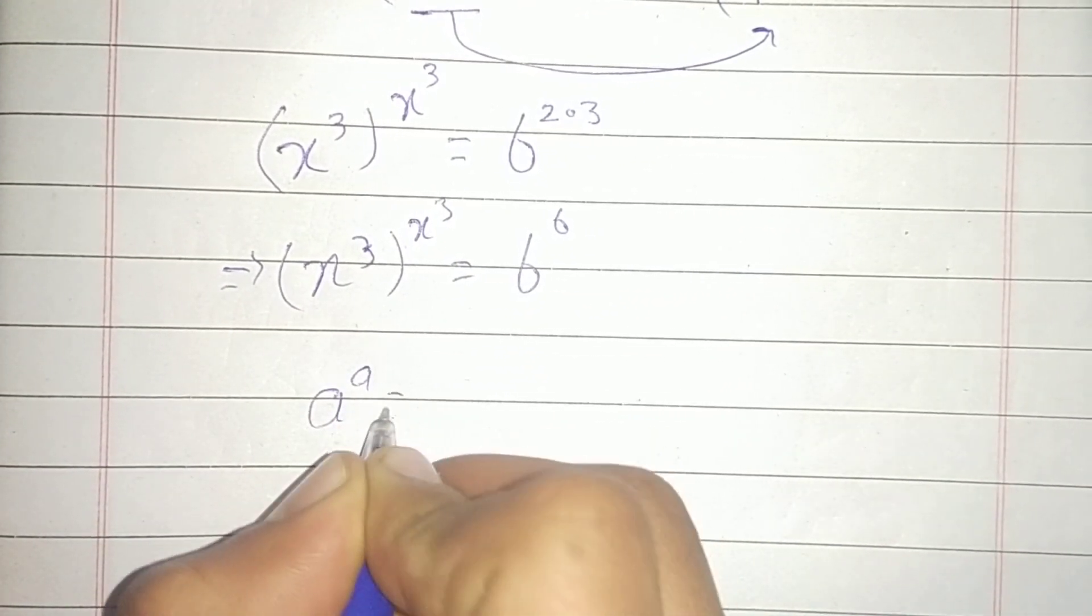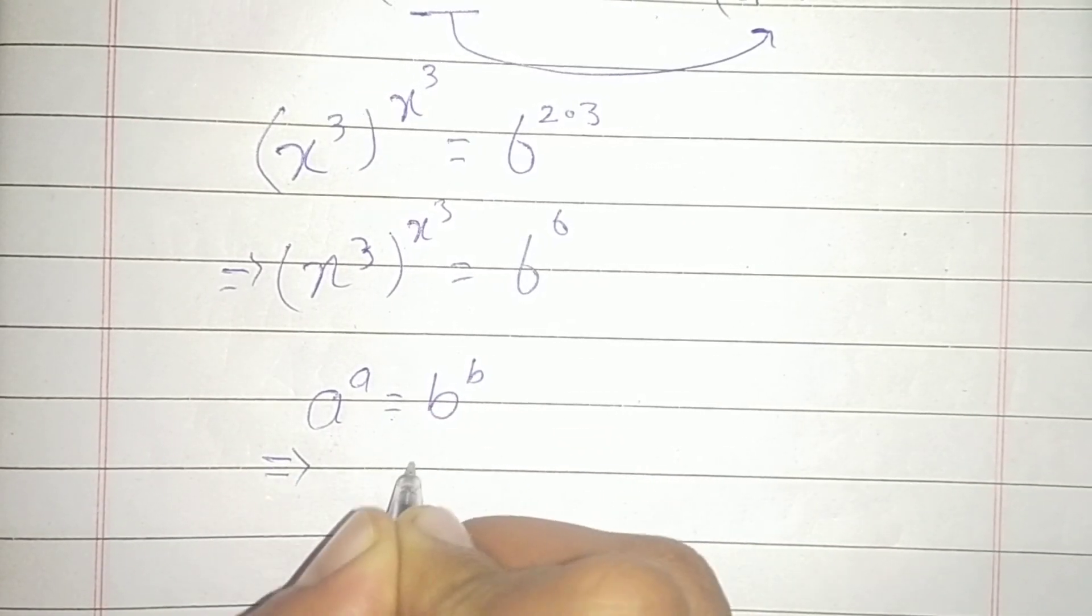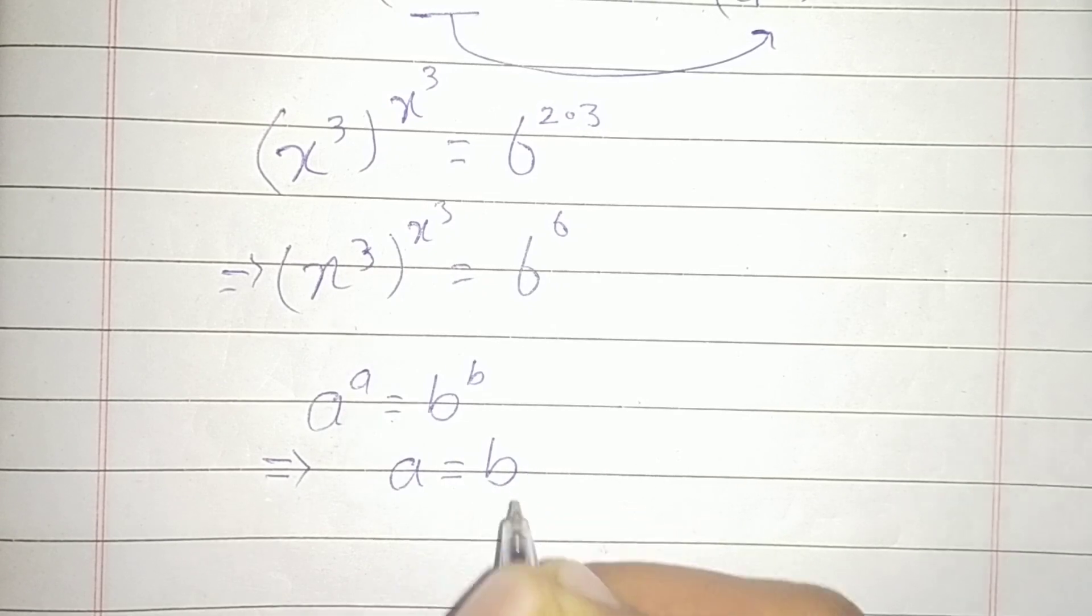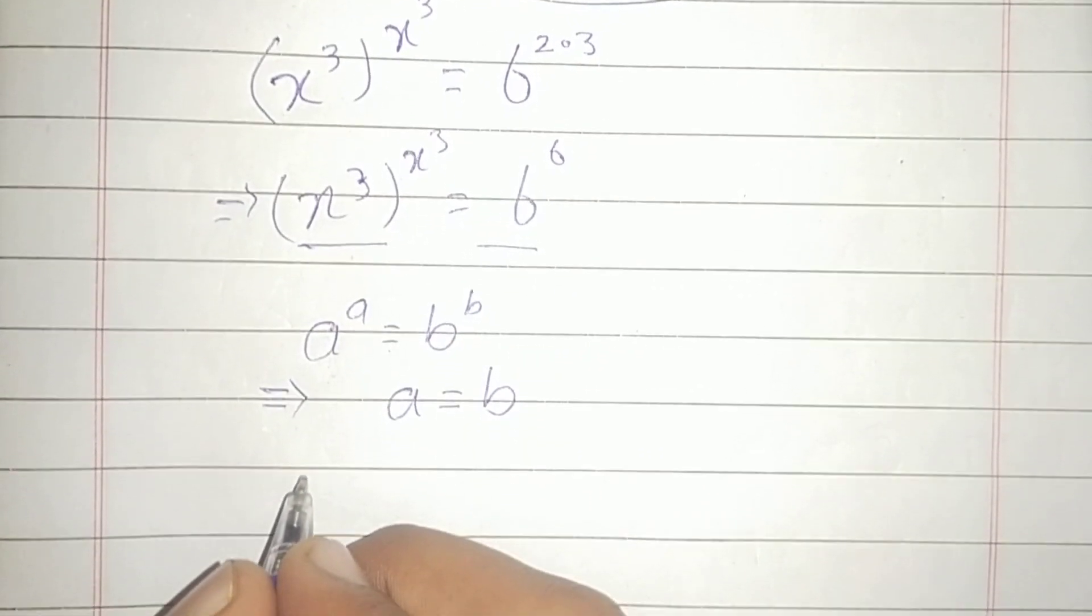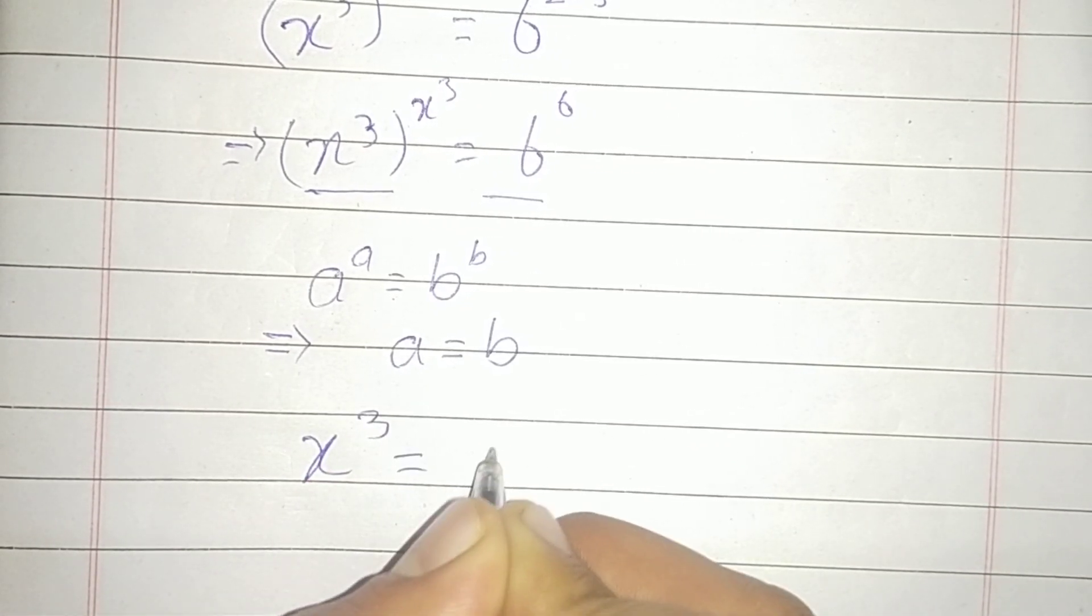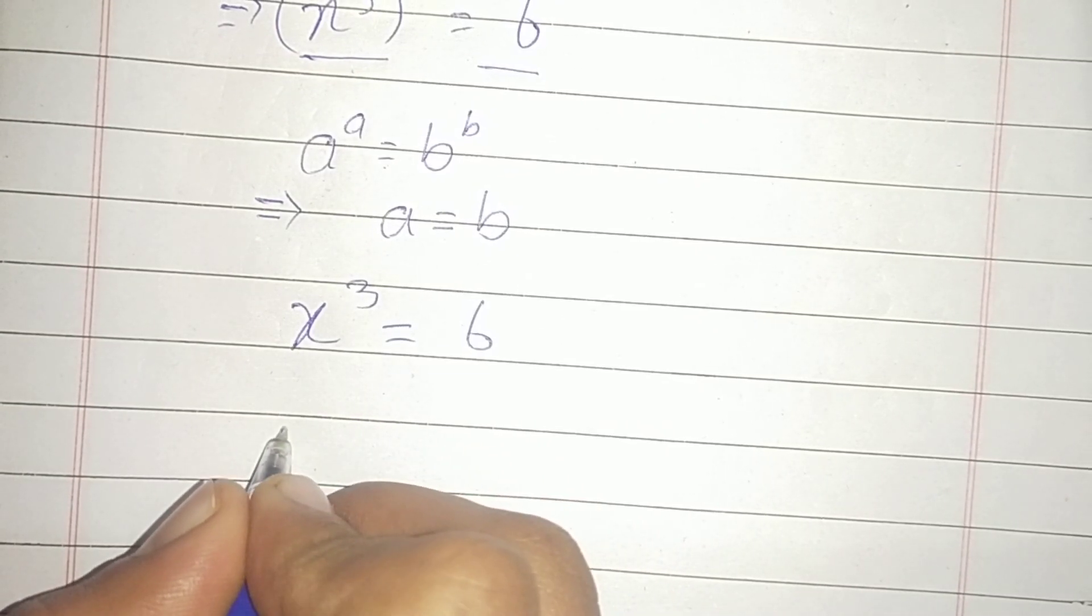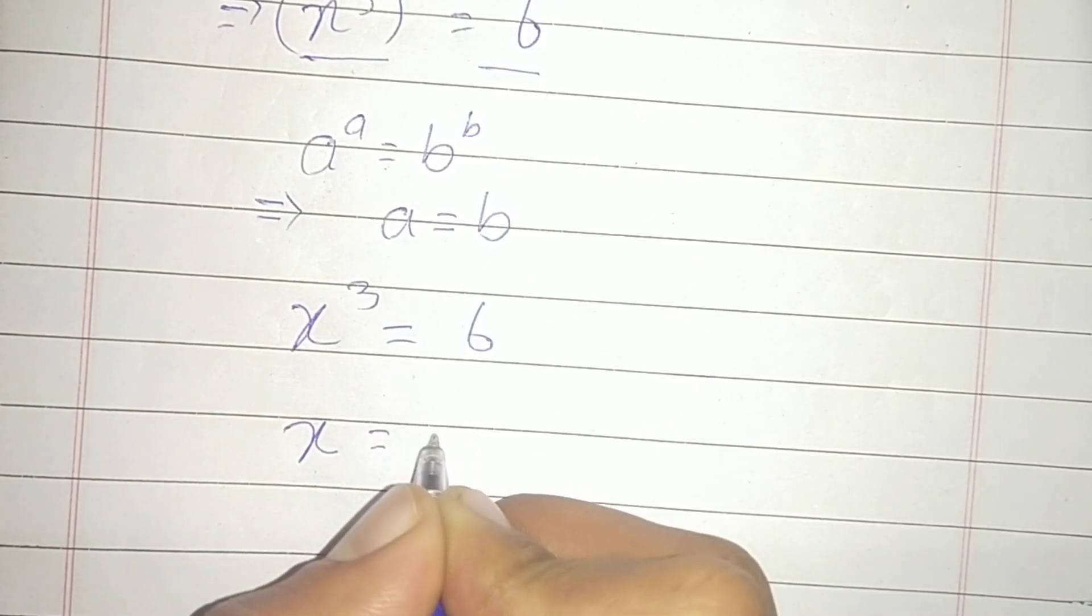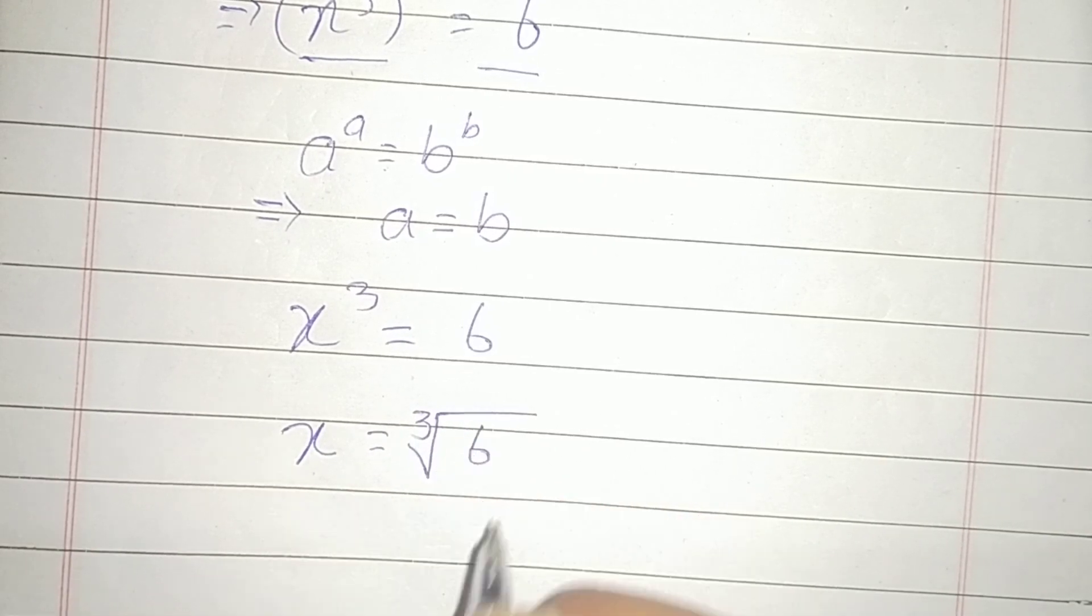We have the property that a^a = b^b implies that a = b. So applying this property here, we can equate the bases: x^3 = 6, and x = the cube root of 6.